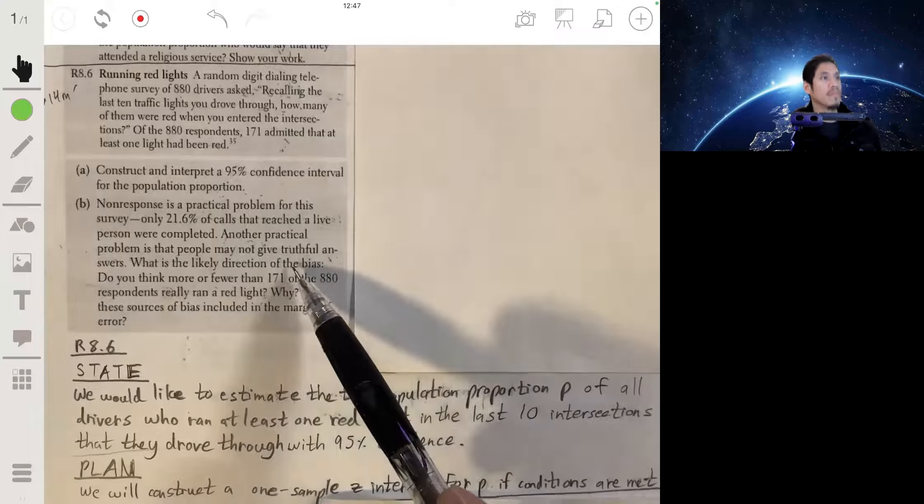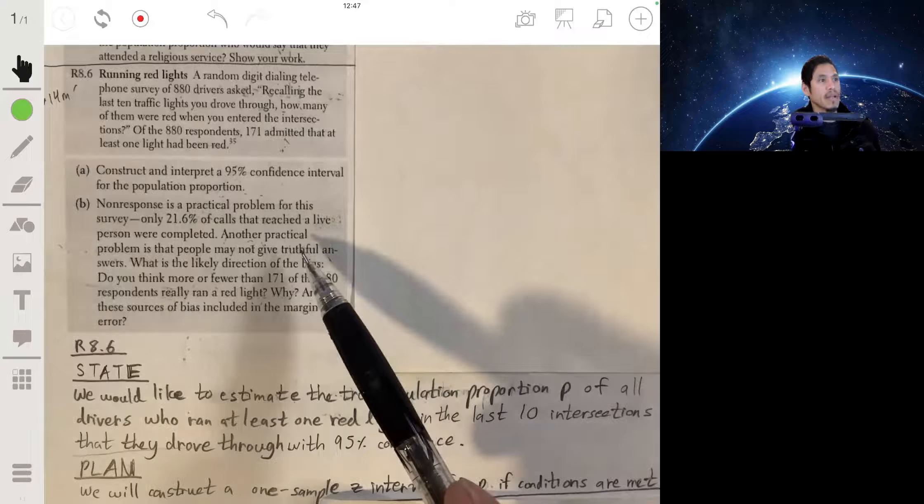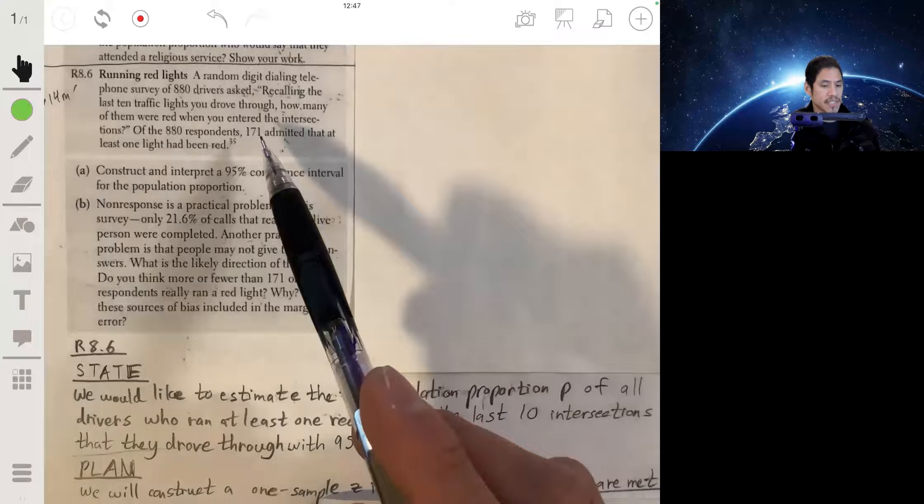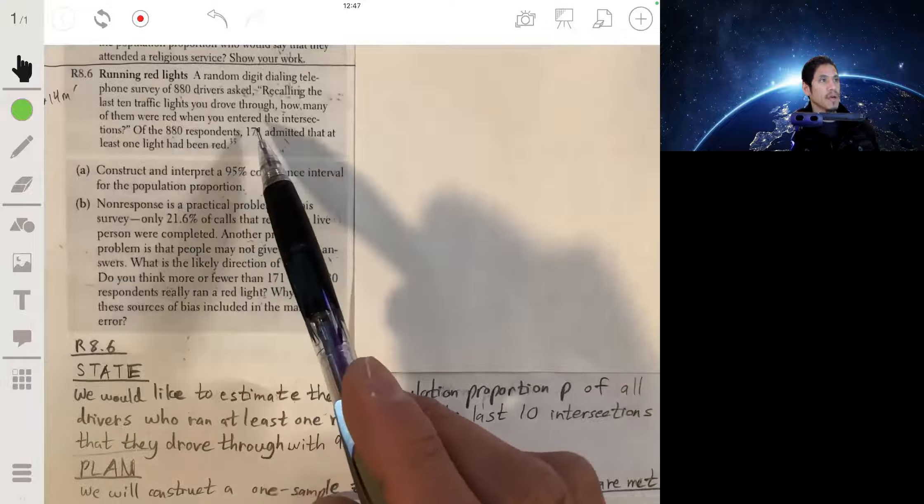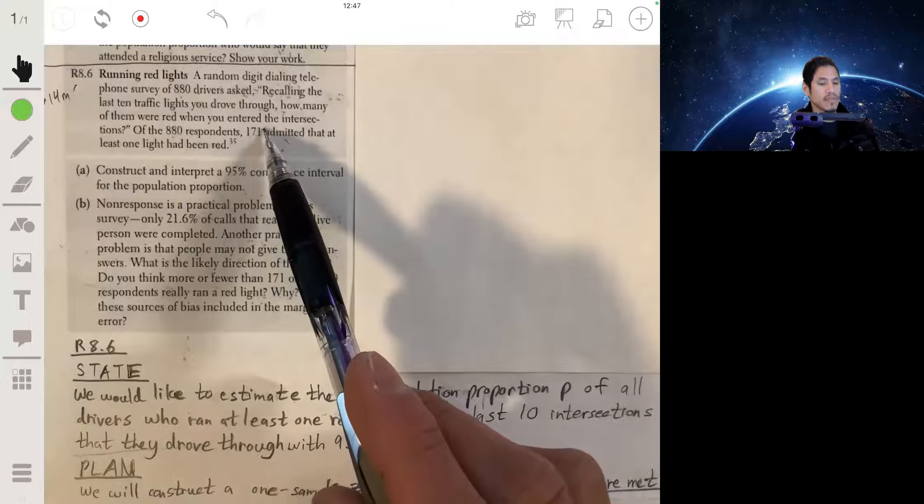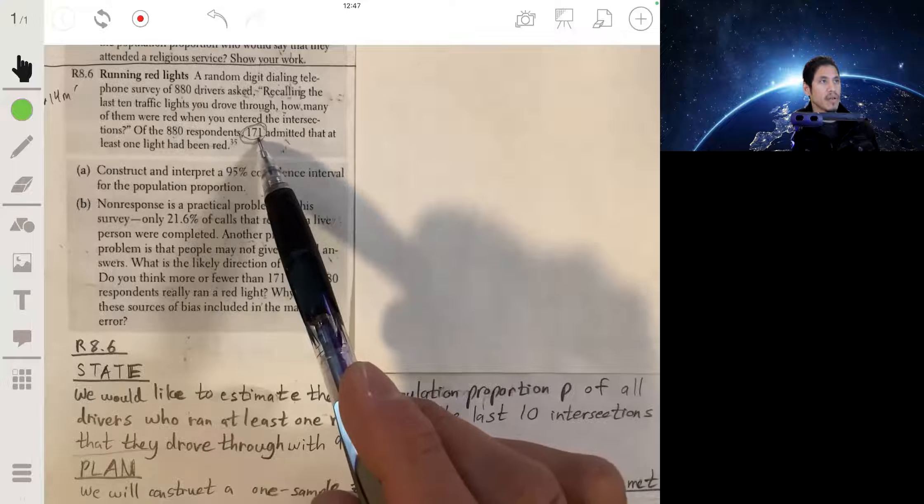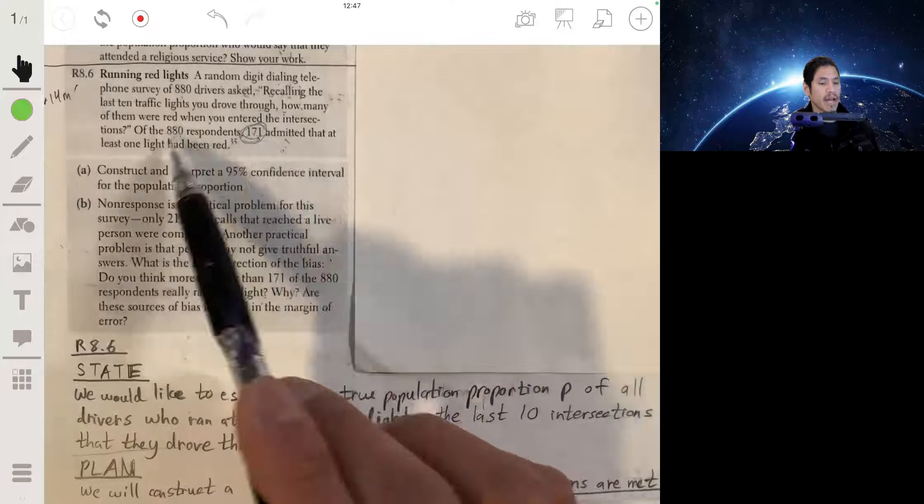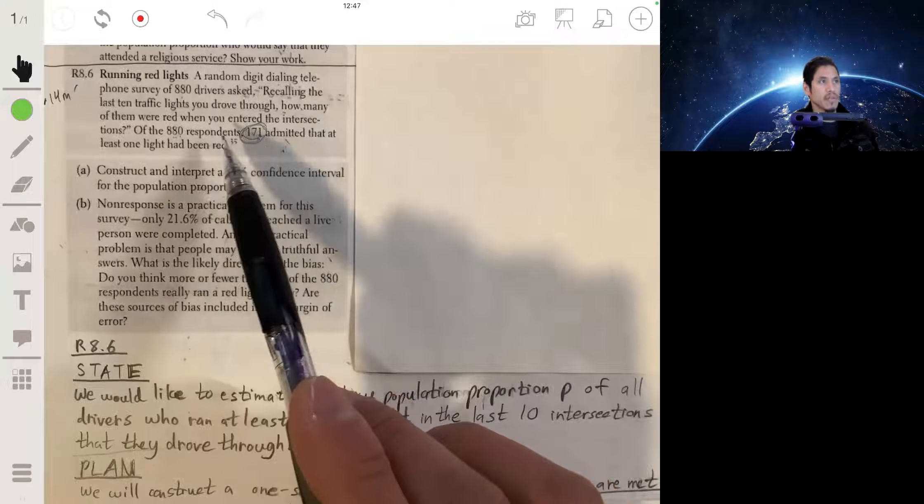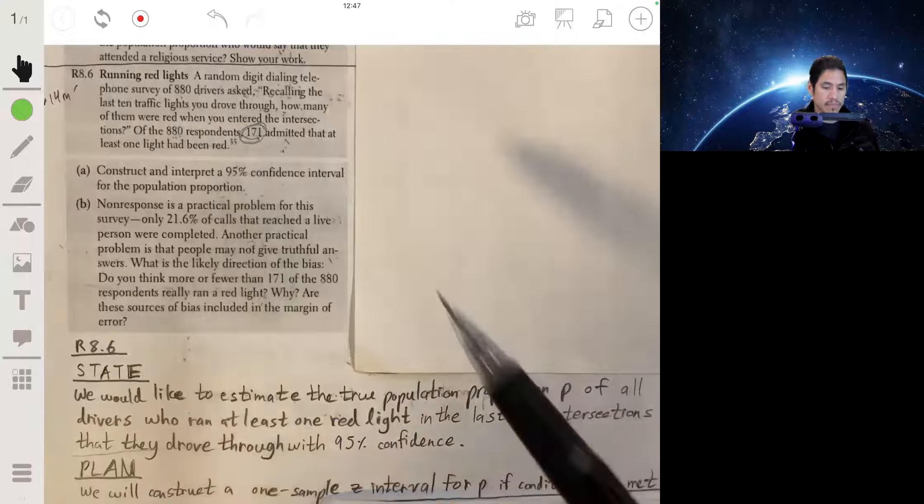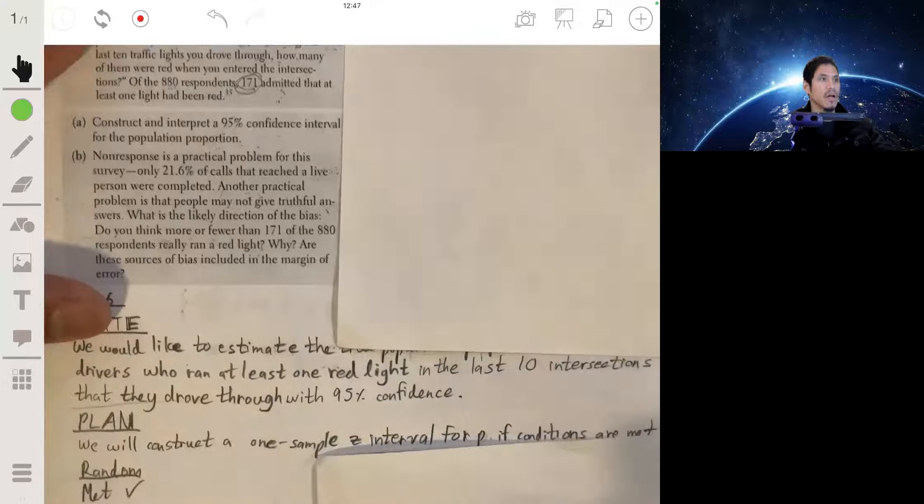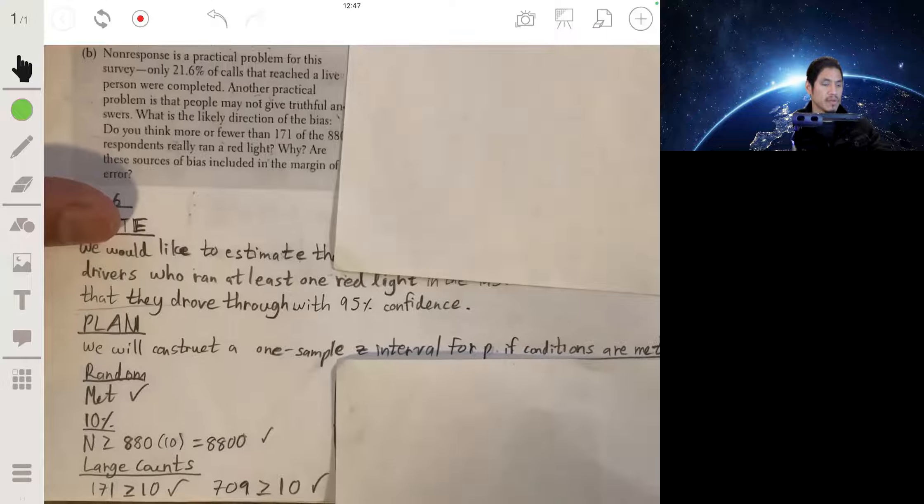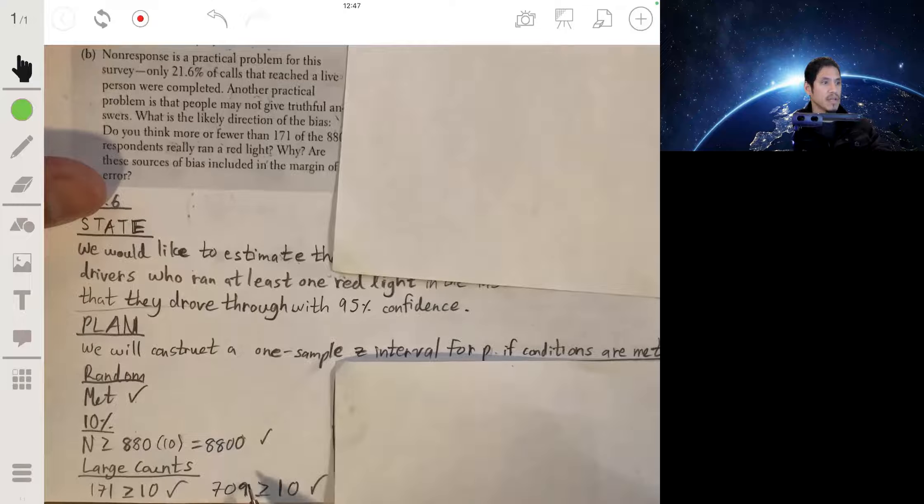And then the large counts: you can do p hat times n and n times 1 minus p hat is at least 10, but it's also known as the number of successes and failures. So the number of successes is 171, so that's at least 10. The number of failures are just what's remaining from that, so if we take 880 and take away 171, that'll leave us with 709. So both those are at least 10, so that is met. So the random, 10 percent, and the large counts condition are all met.